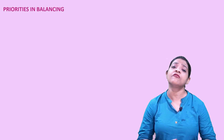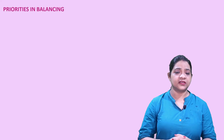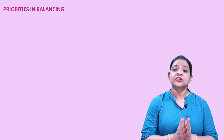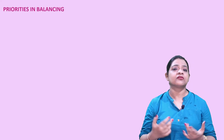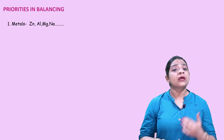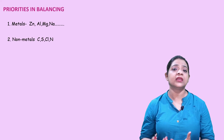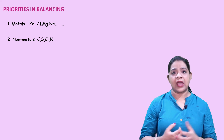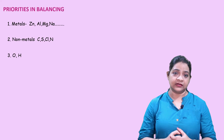While balancing a chemical equation, you may come across equations with metals, non-metals, oxygen, and hydrogen. First priority should be given to metals like sodium, aluminium, and potassium. Then comes non-metals like chlorine, bromine, and nitrogen. Third priority should be given to oxygen and hydrogen atoms while balancing.